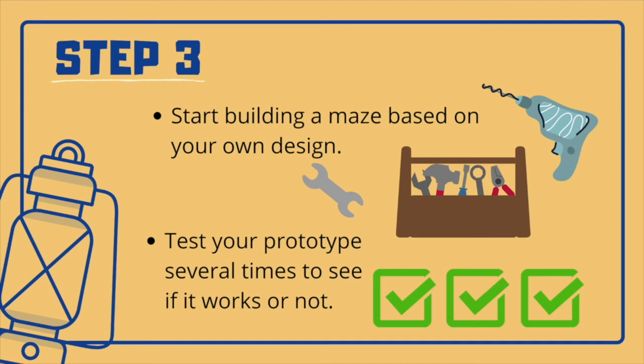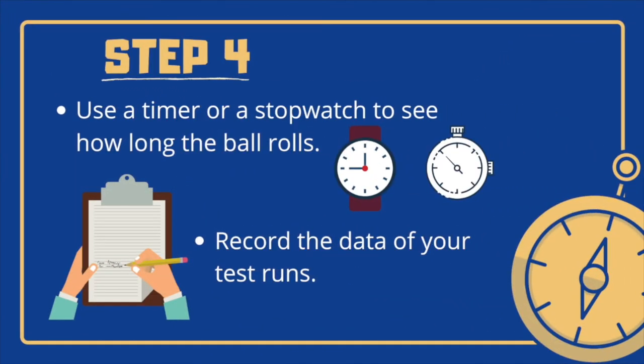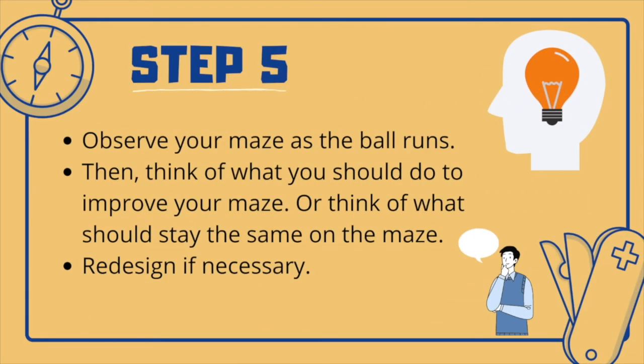Then, test your prototype several times to see if it works or not. Next, use a timer or a stopwatch to see how long the ball rolls, and record the data of your test runs. Afterwards, observe your maze as the ball runs, then think of what you should do to improve your maze, or think of what should be kept the same on the maze. Redesign if you need to.